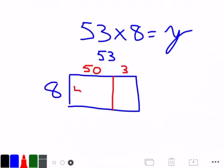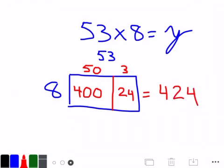8 times 50 is 400. 8 times 5 is 40. Add the other 0, that's 400. 8 times 3 is 24. 400 plus 24 equals 424. Really simple strategy.